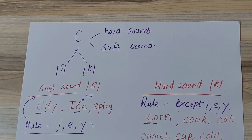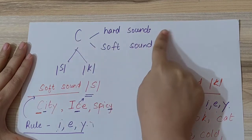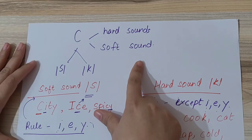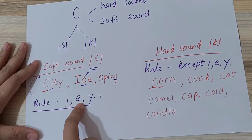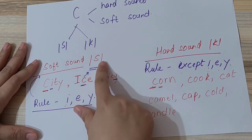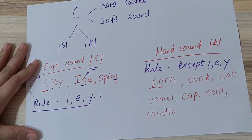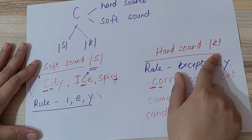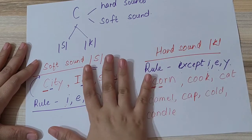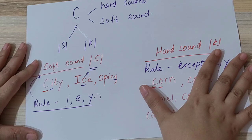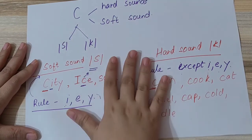So I hope this video was clear. This is the rule which you need to understand for pronunciation of letter C as soft and hard sound, that is 'sa' and 'ka'.